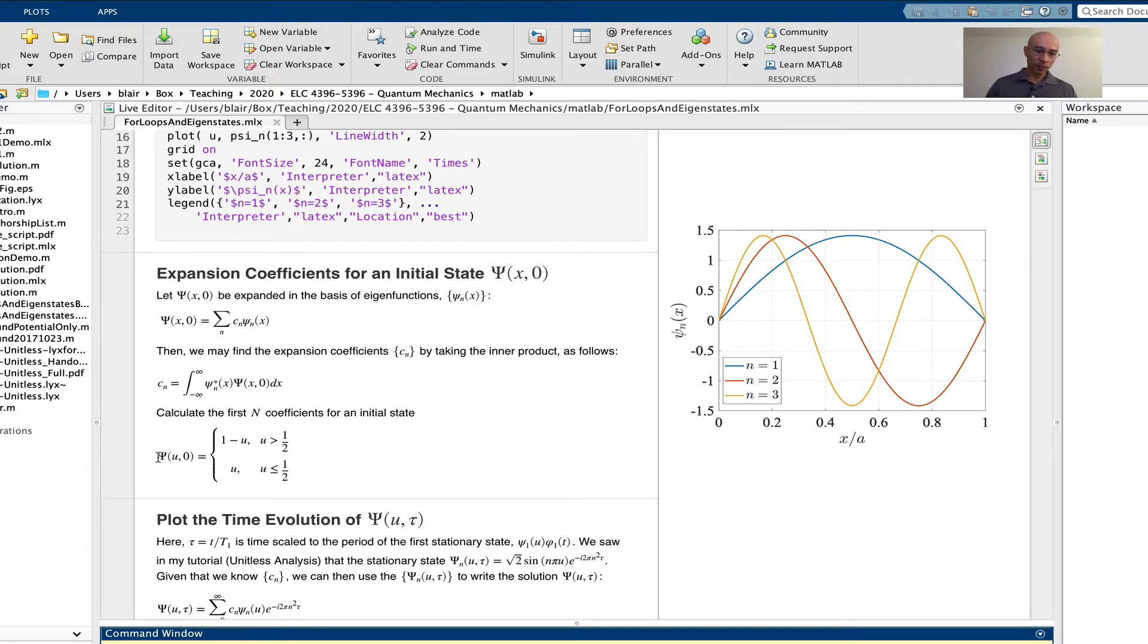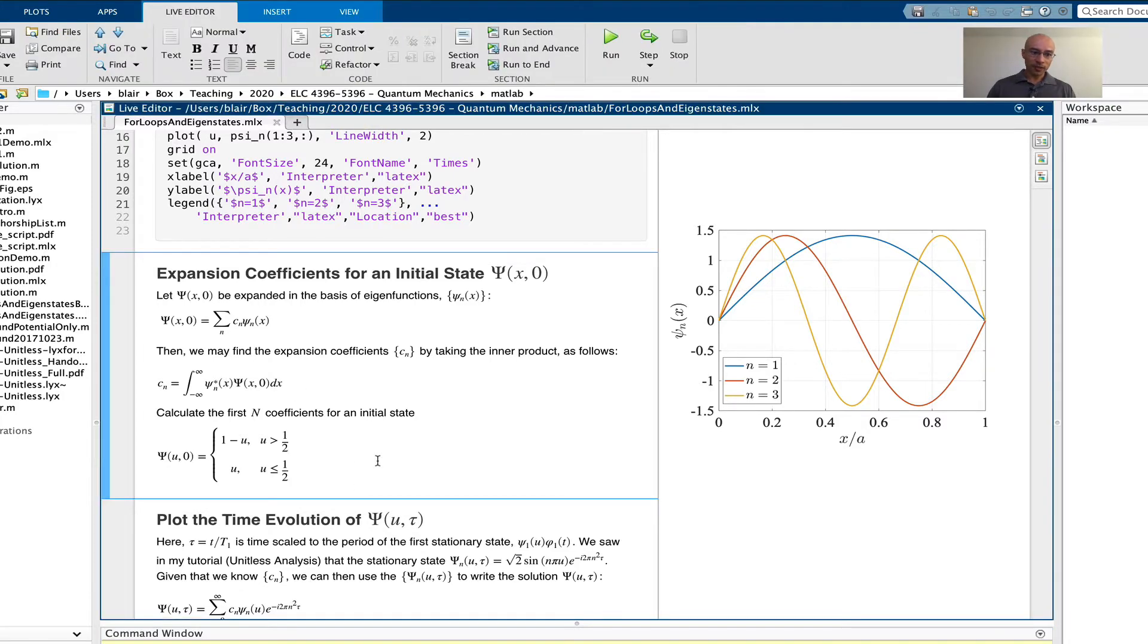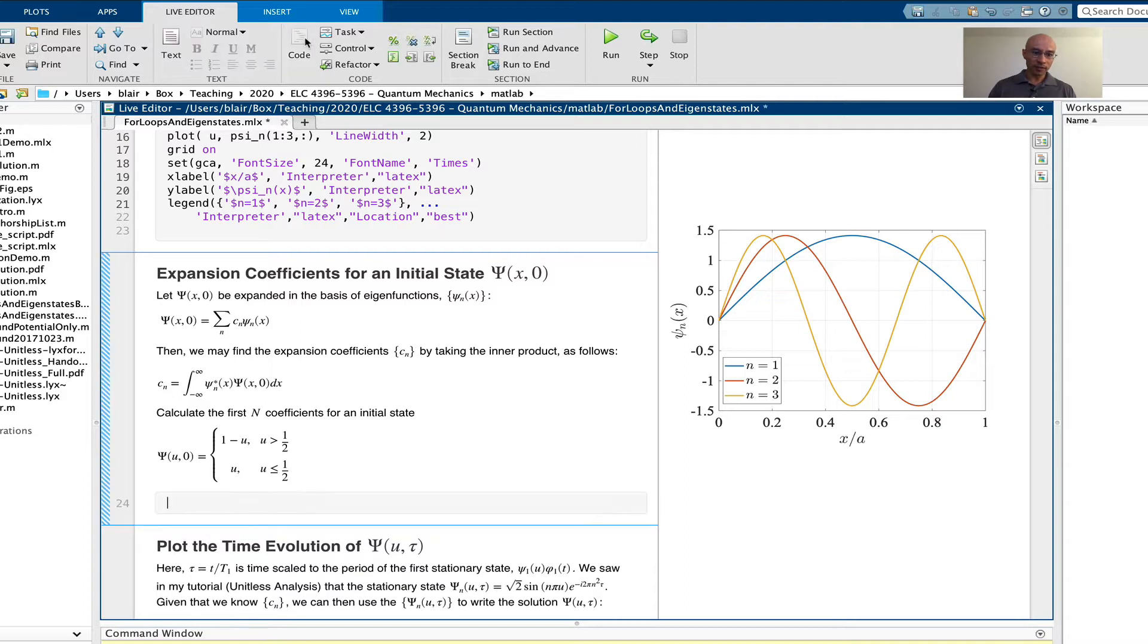The first one will be to represent this initial state here, and the second part will be to calculate the expansion coefficients for the initial state. So let's get started. I'm going to put my cursor here, and there should be a code button. There it is. I get a new code block to put in here.